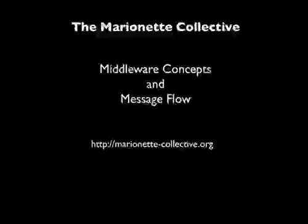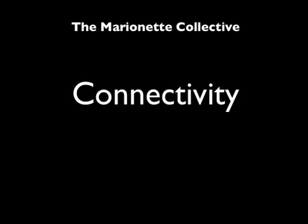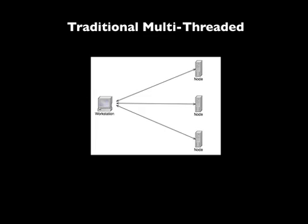I want to do an introduction screencast about the message flow, major components and how we use middleware in the MCollective. First, we need to deal with connectivity. In a traditional system like Capistrano, you would basically have your workstation running a multi-threaded program that attempts to connect directly to every node.